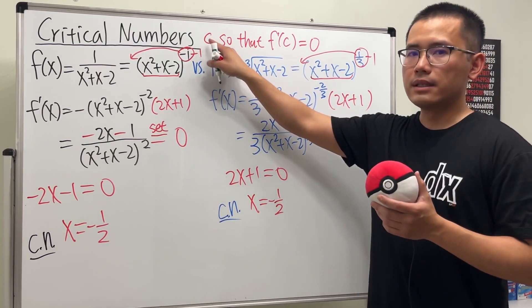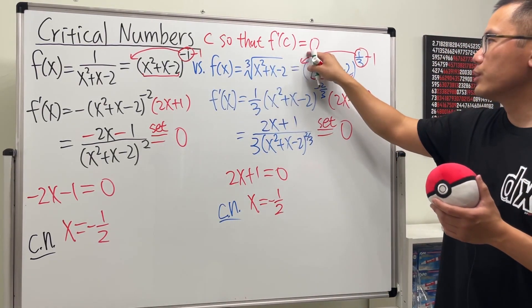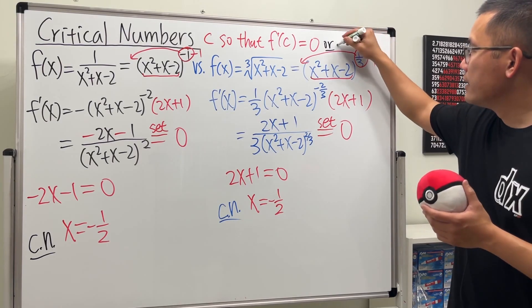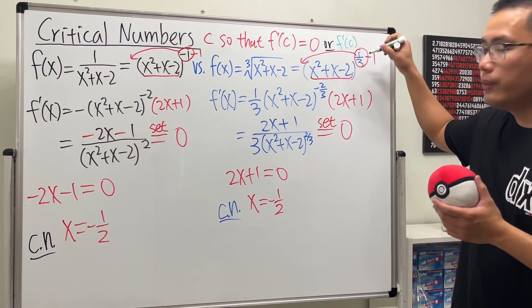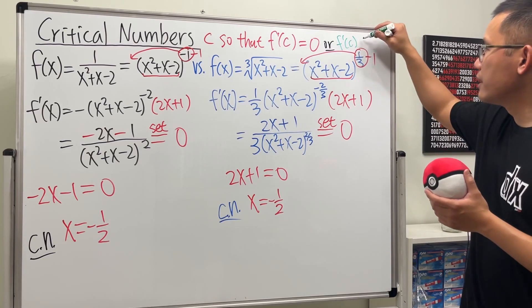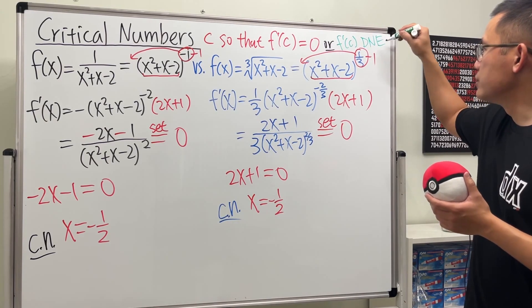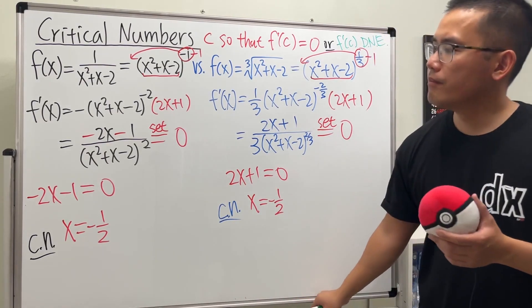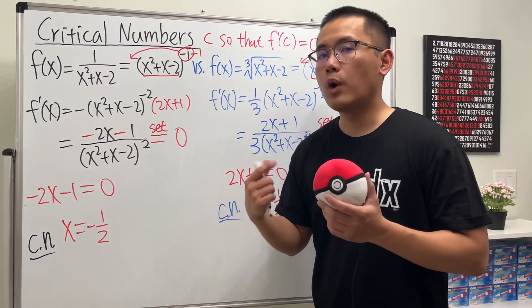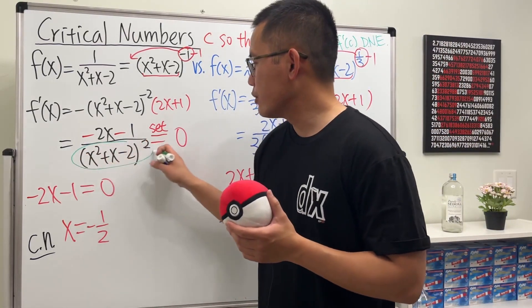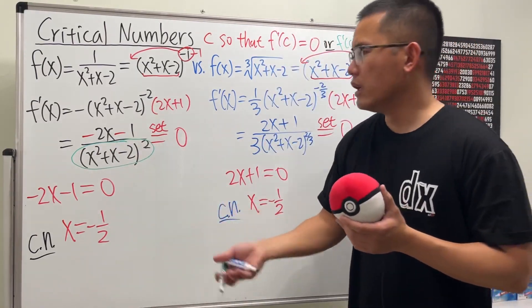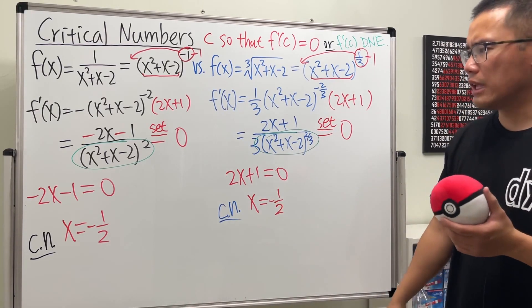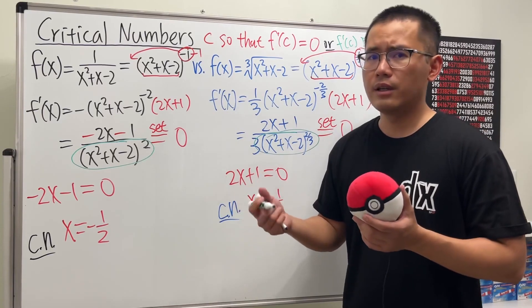Now for the second case: the derivative at c does not exist (DNE). When we have a fraction, to make the derivative not exist we look at the denominator and set it equal to zero. Both functions have denominators, so we set both equal to zero to find where the derivative doesn't exist.